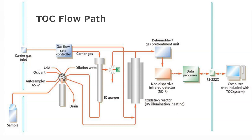Here we see a diagram of the flow path for the instrument. Our two main inlets are carrier gas, which is typically some ultra pure air or another inert gas, and our sample, which is injected using an auto sampler. This eight-port diverter valve is a very important part of the instrument since it connects all of the influent lines and controls where the flow is going. It connects the sample, the auto sampler, the oxidant, acid for sample acidification, dilution water, and our combustion chamber or oxidation reactor as it's sometimes called.